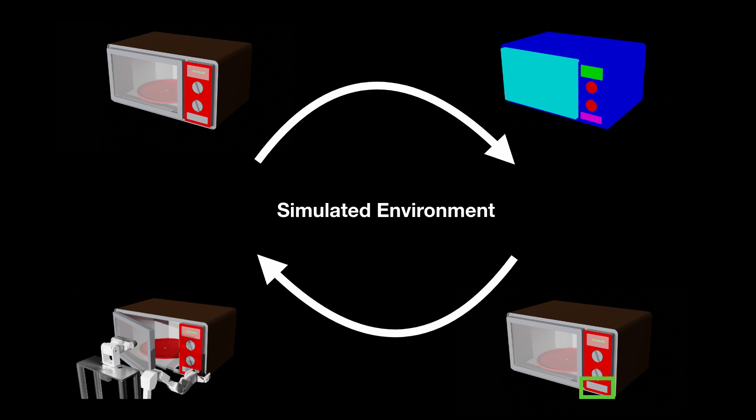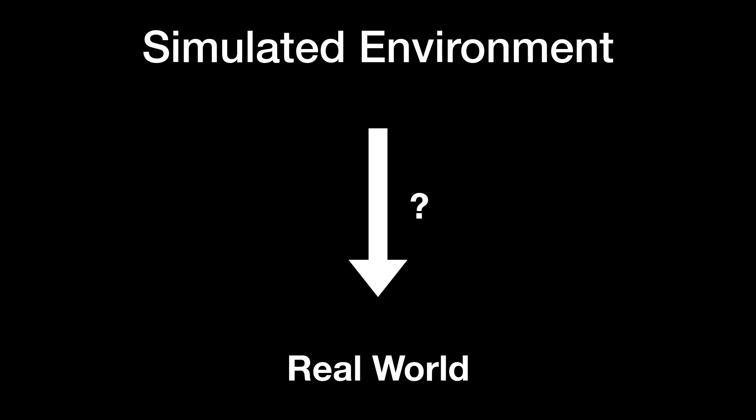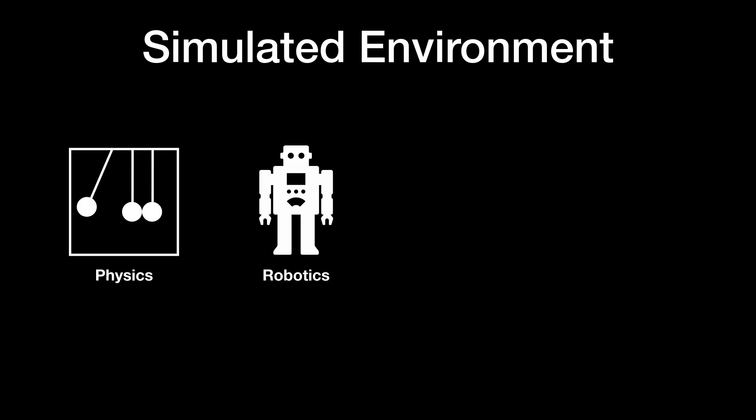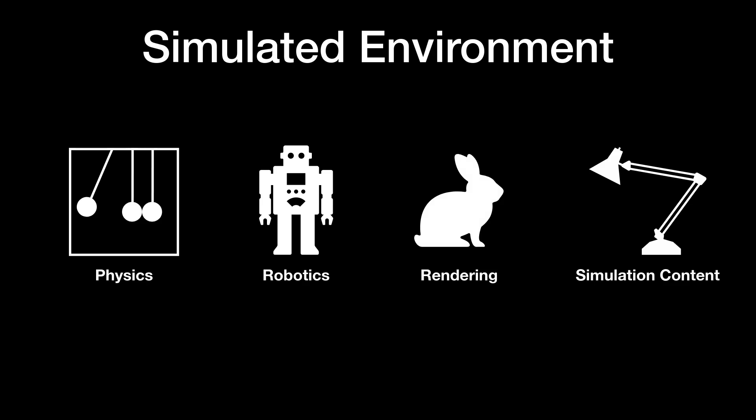Since data collection in the real world is so hard, people turn to another direction: using a simulated environment. In simulation, we do not need to worry about damaging hardware, and we can run multiple instances to increase efficiency very easily. However, we face another problem — the sim-to-real gap. We want whatever is learned in simulation to transfer to the real world relatively easily. For that purpose, we need accurate physical simulation, real-world-like robotics integration, realistic rendering, and content for simulations such as object and robot models.